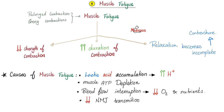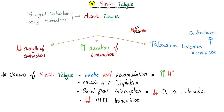Next, muscle fatigue. With prolonged or strong contractions, your muscle will get tired — meaning decreased strength of contraction, increased duration of contraction, and relaxation becomes incomplete, leading to muscle contractures. Why does my muscle get tired? Lactic acid accumulation, muscle ATP depletion, blood flow interruption, and decreased neuromuscular junction transmission: accumulation, depletion, interruption, transmission.